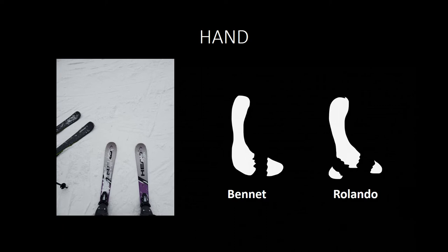Subungual hematomas are hematomas underneath the nail. If present and painful, the next best step is trepanation — using a sterile needle in a circular motion through the nail to release the blood. Gamekeeper's thumb presents with weakness in the pincer grasp, seen in skiers and football players. It affects the ulnar collateral ligament; if completely torn, the patient needs surgery. Otherwise, treat with rest and splinting.